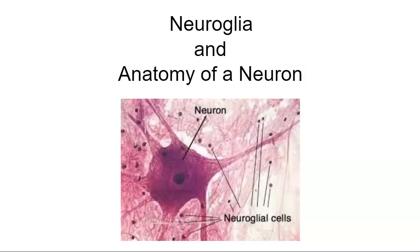We're going to study two topics in this video: neuroglia, or glial cells as they're called, and we'll look at the anatomy of a neuron. Here's a neuron and these supporting cells — these are the nuclei of the glial cells.